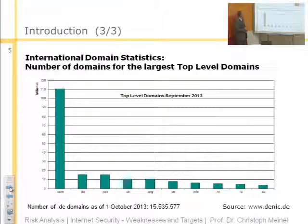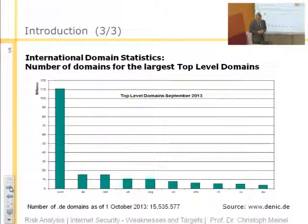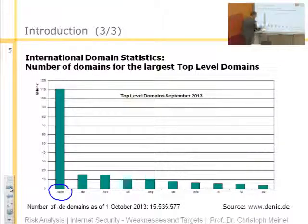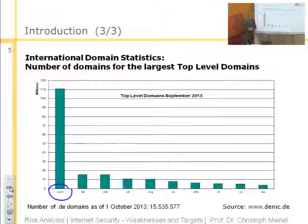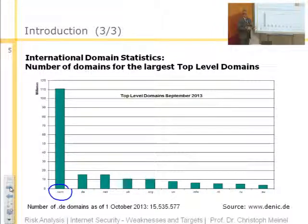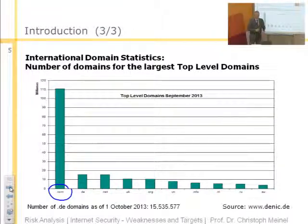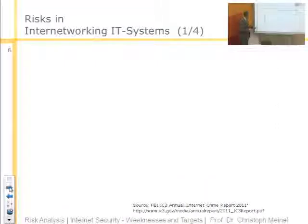Here is another chart which shows the distribution of international domain statistics. Of course, .com is the most often used Internet domain, but .de, .net, and .uk are also important and frequently used top-level domains. These are the actual numbers as of September 2016.